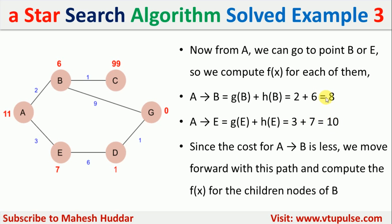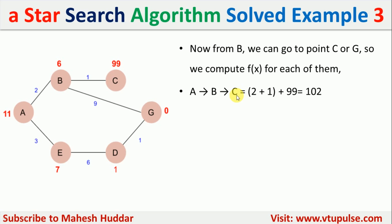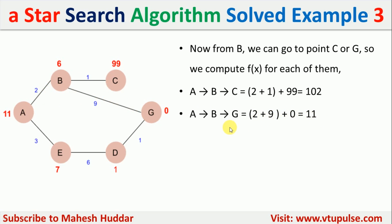Comparing these two values, the path A→B leads to the minimum cost, so we select A→B. From B, the reachable nodes are C and G. We calculate f(C) = g(C) + h(C) = (2+1) + 99 = 102. For G, f(G) = (2+9) + 0 = 11. We have reached the goal node G, and the cost of path A→B→G is 11.